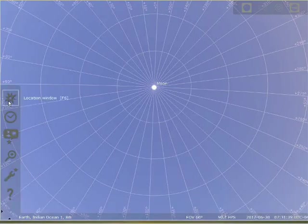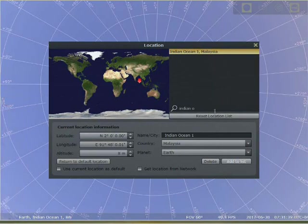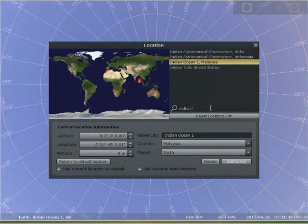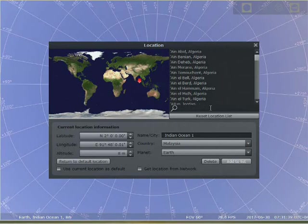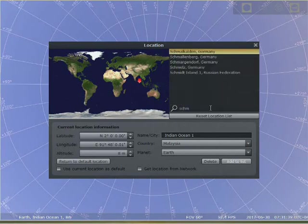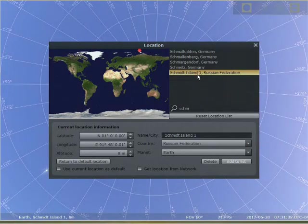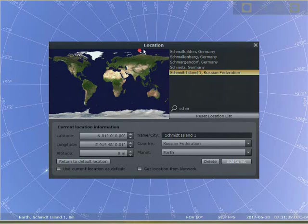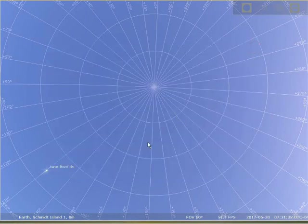Now we'll need another point, and I've got that preset as well. This point is going to be Schmidt Island in the Russian Federation here, way up here at the top of the world, at the top of the globe.